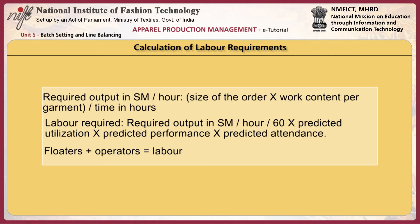Required output in standard minutes per hour equals the size of the order multiplied by the work content of the garment, divided by time in hours. Labor required equals required output in standard minutes per hour, divided by 60, multiplied by predicted utilization, predicted performance, and predicted attendance. Floaters plus operators equals total labor.